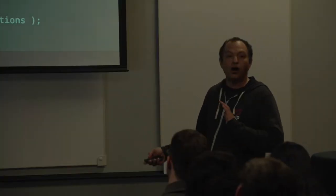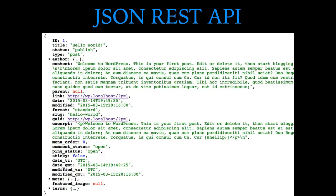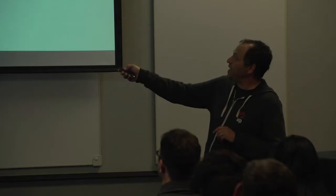Here's what the data looks like when the JSON request goes out. When that model makes its JSON request, all this data comes back from the REST API — and most importantly, title and content. Those are the two data points I'm mostly concerned about.